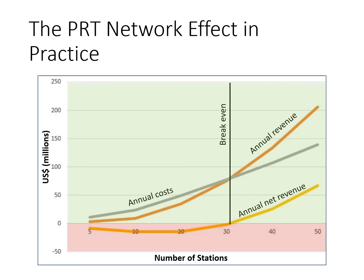As with any transit system, the annual cost and revenue both increase with the number of stations. Unlike other modes, the annual revenue of a PRT system rises faster than the annual cost because it takes full advantage of the network effect.